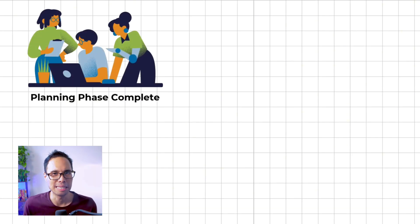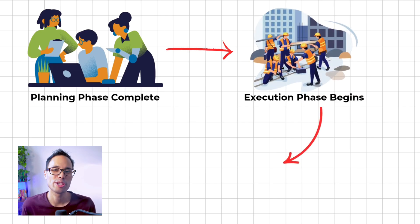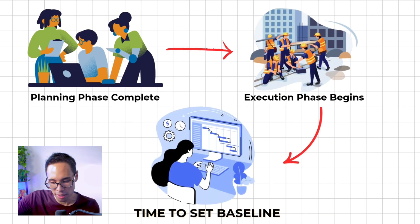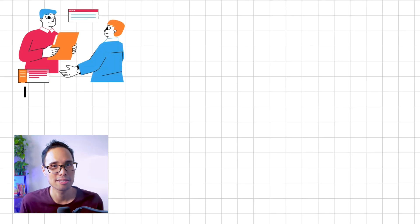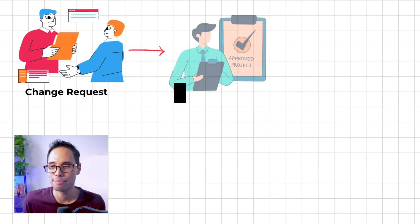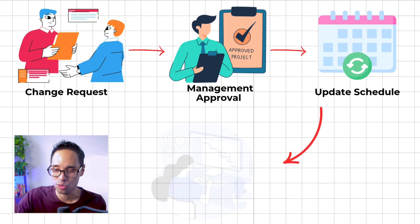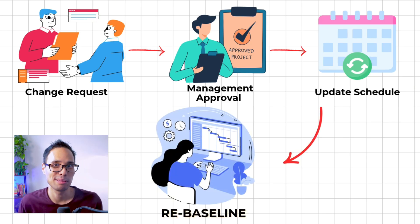When you finish planning a project with your team and you're about to go into the execution phase, that's when you first establish your project's baseline. As you monitor your project's progress and tasks get delayed by more than 30 days, for example, you need to submit a change request, obtain management's approval, update the schedule, and then re-baseline your project plan accordingly.